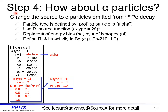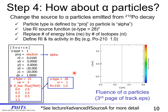Let's go on to Step 4: how about alpha particles? Please change the source to alpha particles emitted from Polonium-210 decay. The particle type is defined by 'proj' in the sample input file; alpha particles are written as 'alpha.' We use the RI source function, which is E-type equal to 28. Please replace the number of energy bins in E by the number of isotopes in I. We should define the RI and its activity in Becquerel. Changed parameters are shown in the sample file in red. We can see the fluence of alpha particles on the third page of track.eps.